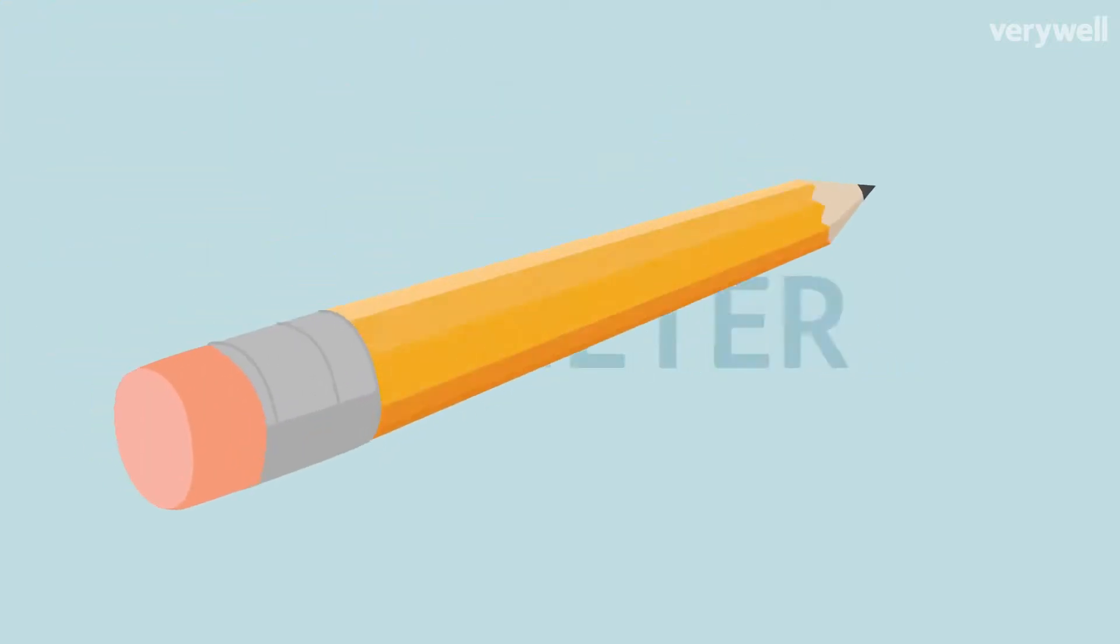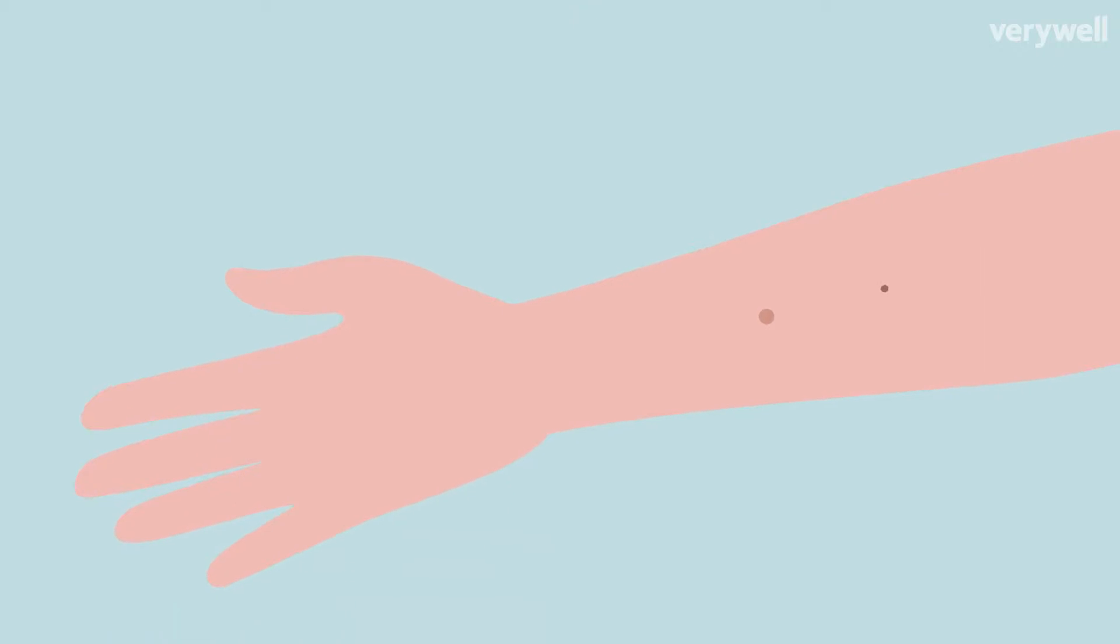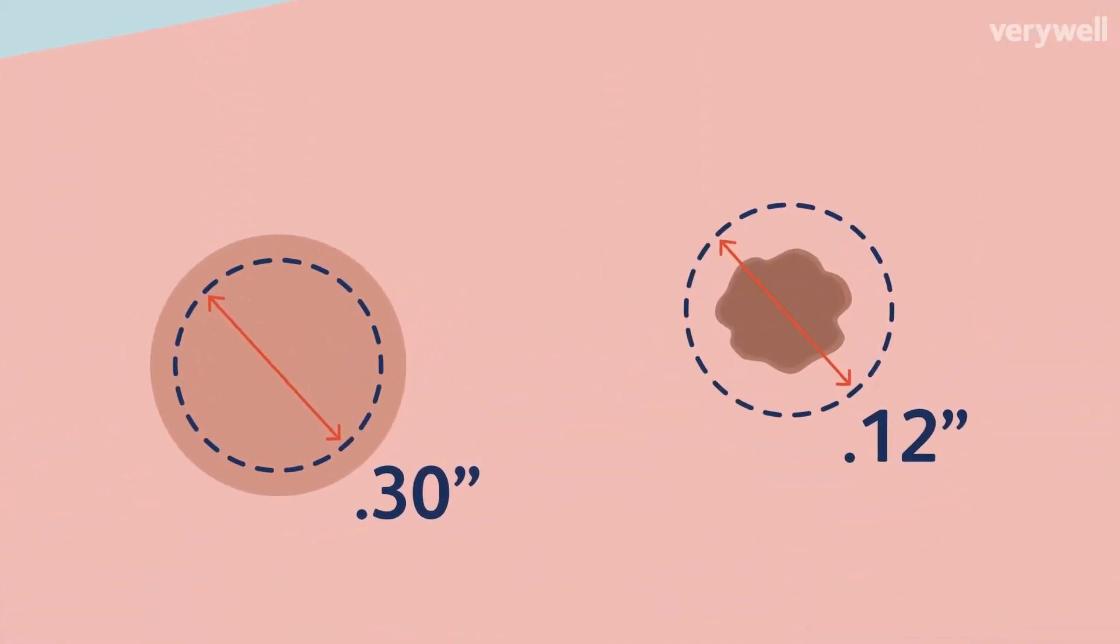D is for diameter. If it's larger than a pencil eraser, it should be checked by a doctor. A smaller growth can still warrant a visit, but anything over one quarter inch is a key identifier.